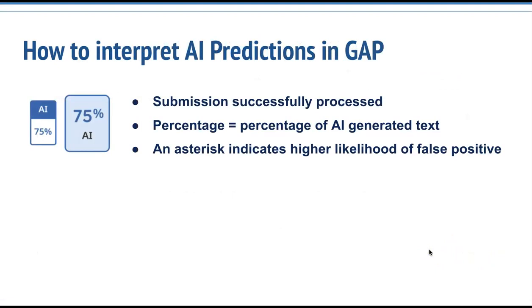Blue with a percentage displayed between 0 and 100 indicates the submission has been processed successfully. The displayed percentage indicates the amount of qualifying text within the submission that Turnitin's AI writing detection model determines was generated by AI. This percentage is not necessarily the percentage of the entire submission. If text within the submission was not considered long-form prose text, it will not be included. Long-form prose is individual sentences contained in paragraphs that make up a longer piece of written work, like an essay or a dissertation. The tool does not reliably detect AI-generated text in things like poetry, code, bullet points, tables, or annotated bibliographies.